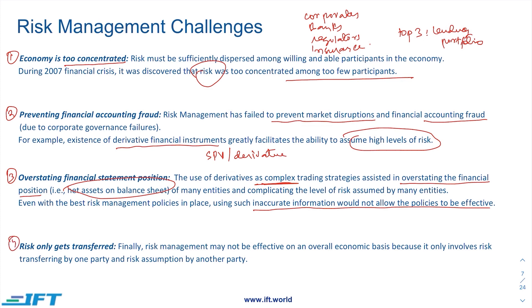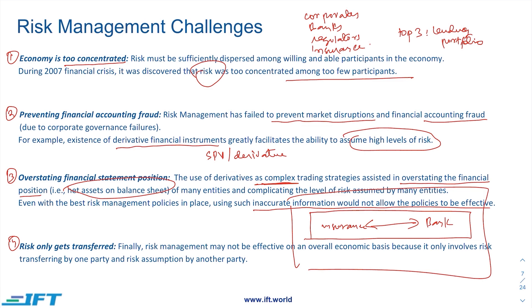The last challenge is that risk only gets transferred. In the earlier example, a bank transfers its risk to an insurance company, but the overall economy remains the same. There are corporates, insurance companies, banks, and individuals all in the same system. You may transfer risk from a bank to an insurance company or from an individual to a corporate, but on an overall level you are only transferring it from one party to another, and if there is any issue with one party, the broader system gets impacted.